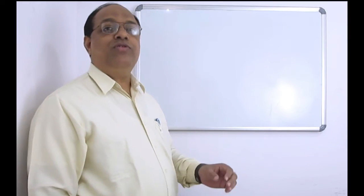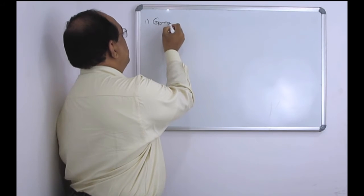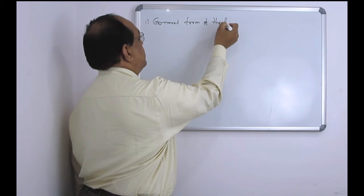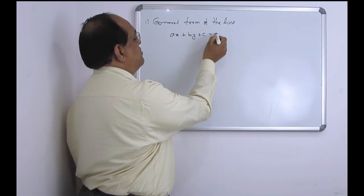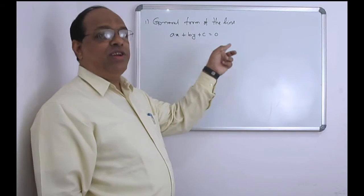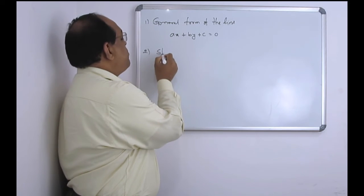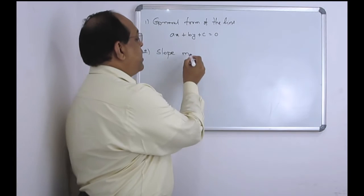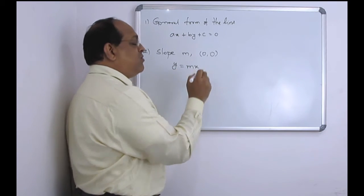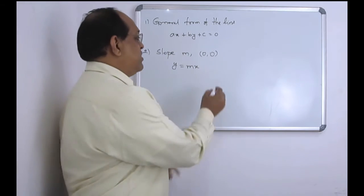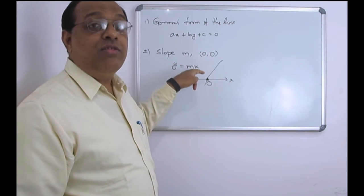Let us see the different forms of the equations of straight lines. The general form of the straight line is ax plus by plus c is equal to 0. If the slope is m and the straight line passes through the origin, then the equation is y is equal to mx.